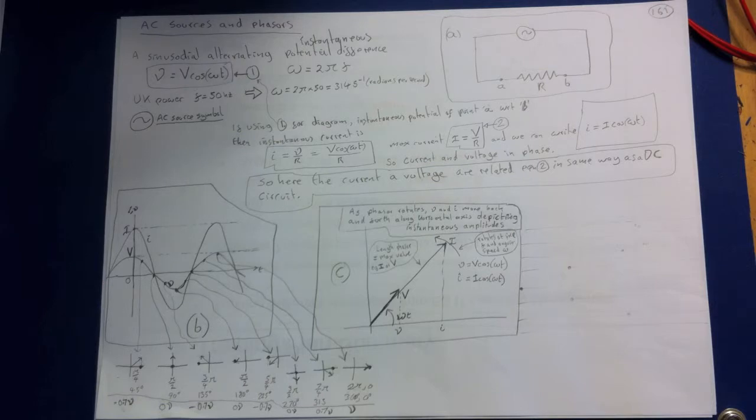We will find phasors convenient for adding sinusoidal voltages and currents and then we can apply the method of vector addition to combine sinusoidal quantities with phase differences. This is a phasor plot here.